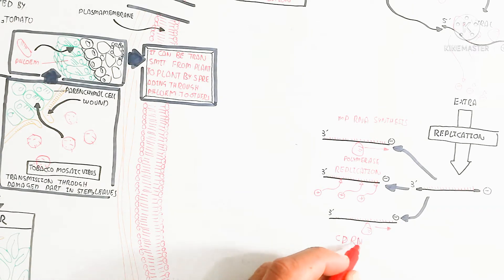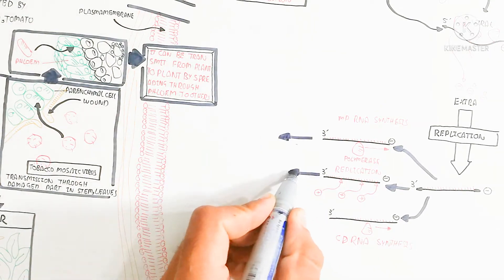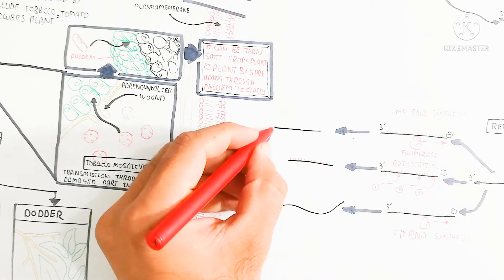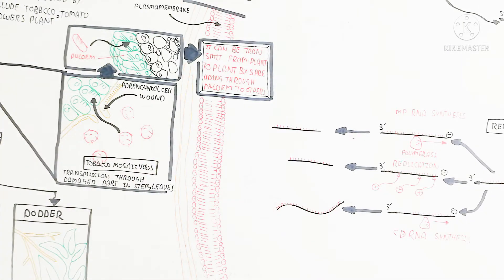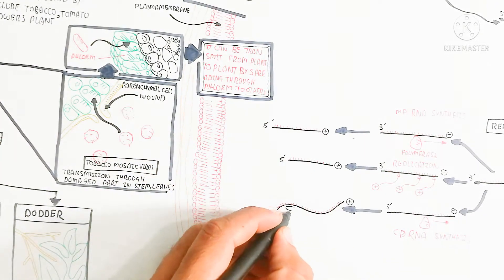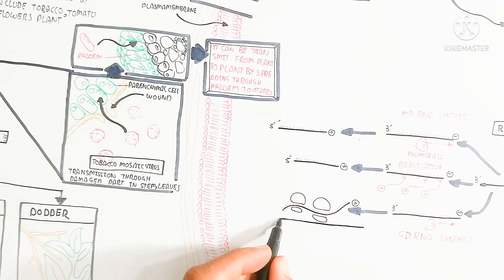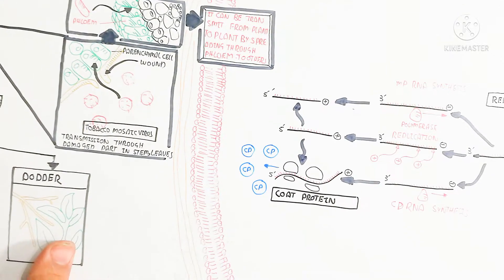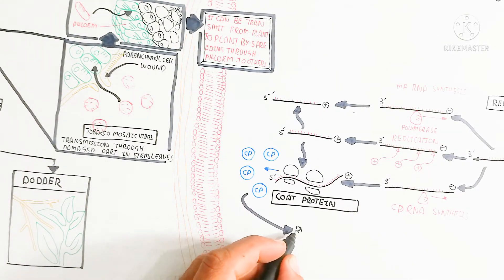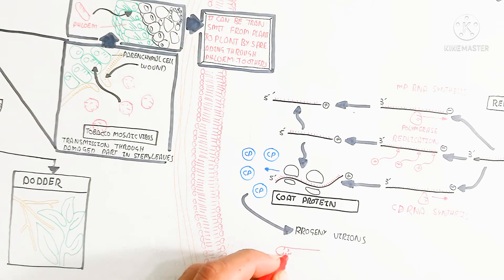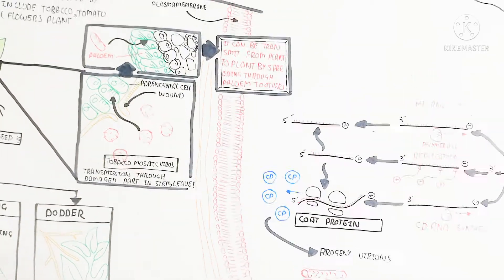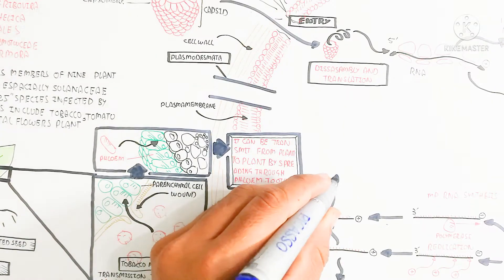CP RNA synthesis also occurs — CP stands for coat protein. The coat protein will be produced, while MP produces the membrane protein. These are different types of RNA that are produced. The coat protein is used for the progeny virus virions. The virions are basically the infectious particle of the virus. More and more coat protein is produced. The coat protein combines with the newly produced 5-prime positive strand RNA, and this strand is assembled. After assembly, a mature virus — the progeny virion — is produced through the combination of RNA and coat protein.